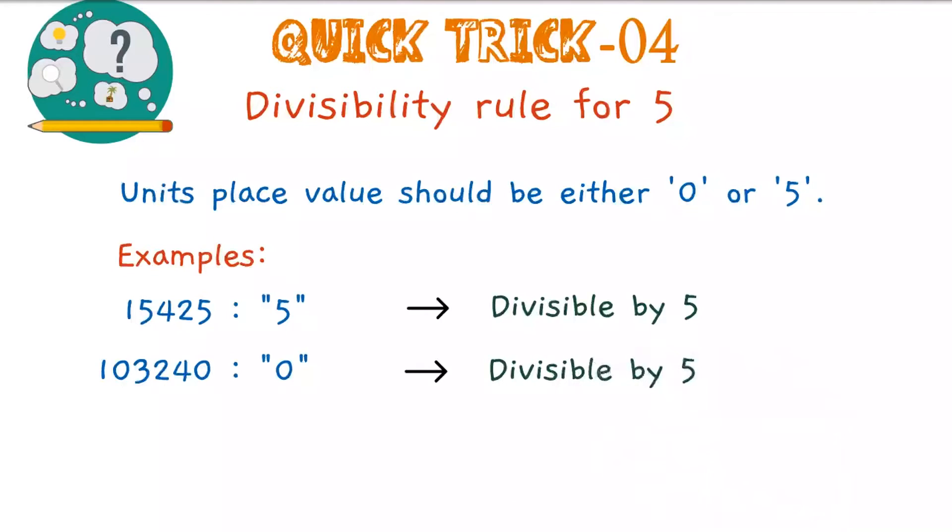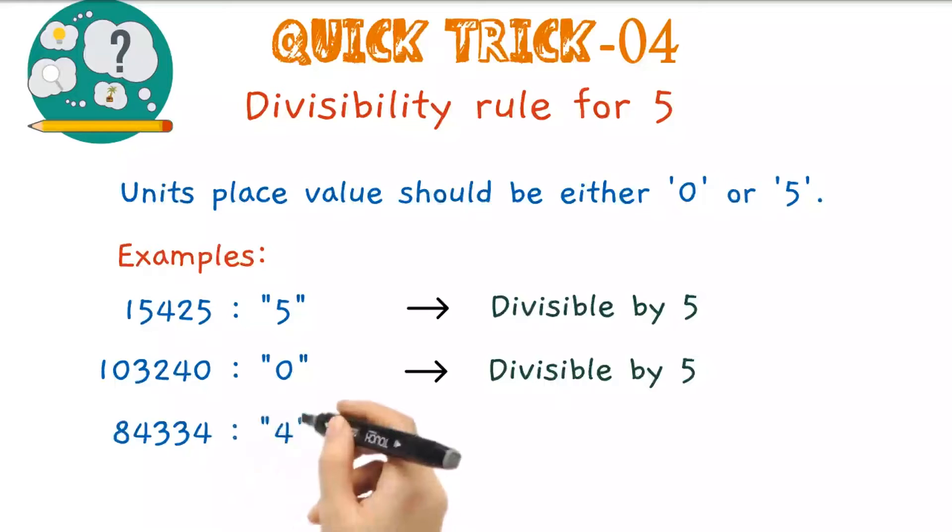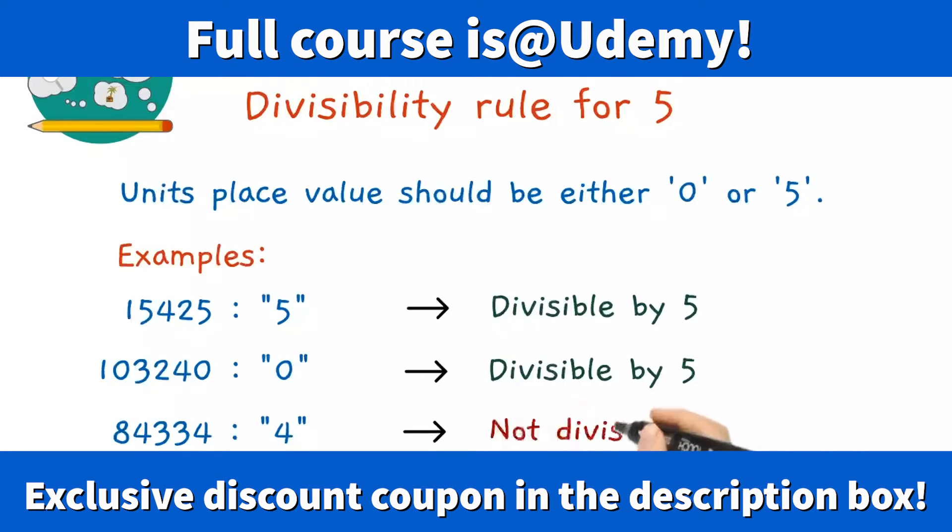Next number is 84,334. Here the unit's place value is 4, so that the number is not divisible by 5.